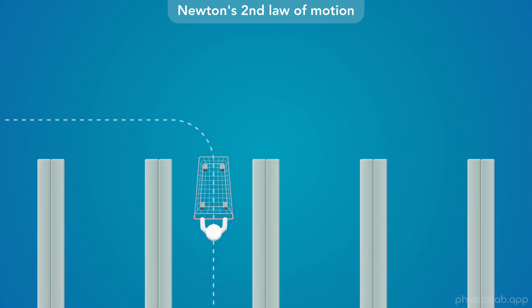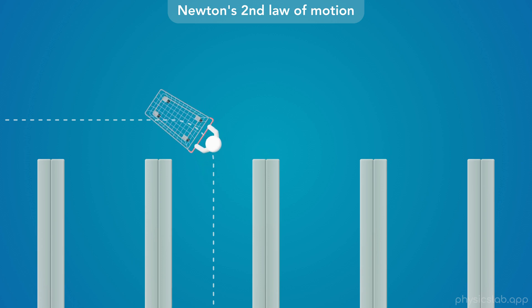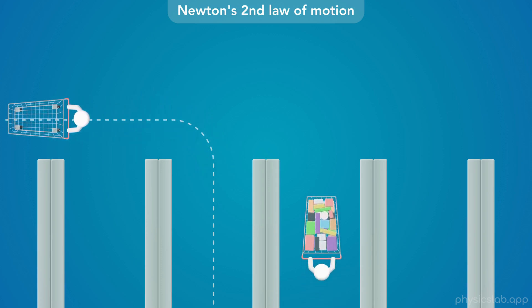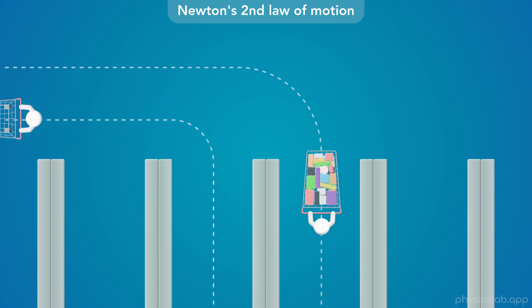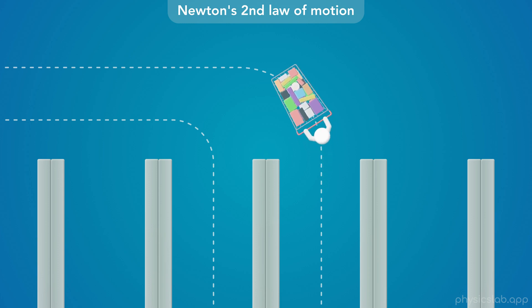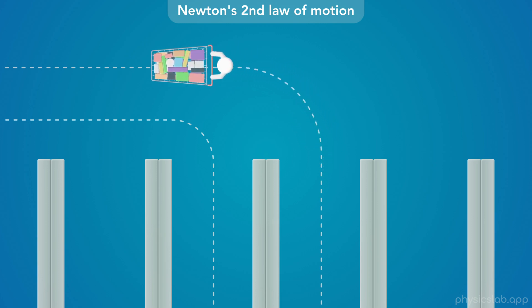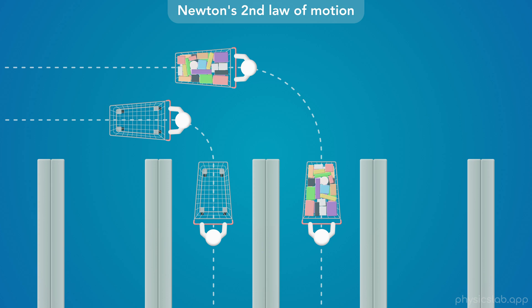You might have also noticed that it's easy to turn the cart when it's empty, but when it's full, it wants to keep going straight, and it takes a lot of force to turn it. Clearly, the only difference is how much stuff is in the cart. So how do we describe that stuff in physics, and how would Newton explain this scenario?